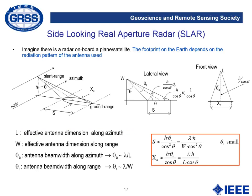SAR principles. We start with what is known as the side-looking real aperture radar. Imagine a radar on board a plane, satellite, or any moving platform used to make an image of the Earth. The footprint on the Earth depends on the radiation pattern of the antenna used, characterized by two angles: the antenna beamwidth along azimuth and the antenna beamwidth along range or elevation. If we have a very directive antenna, the footprint will be smaller; if less directive, it will be wider.